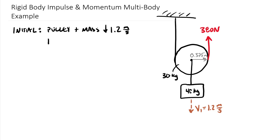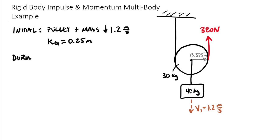We're also given that the radius of gyration about the centroid, k sub g — you can also write it as k-bar — is equal to 0.25 meters. That's a measurement of the distribution of mass of the pulley. If all the mass were located 0.25 meters from the center, that thin ring of mass would have the exact same mass moment of inertia as the pulley itself. During the interval, we have a 380 Newton upward force for 5 seconds.